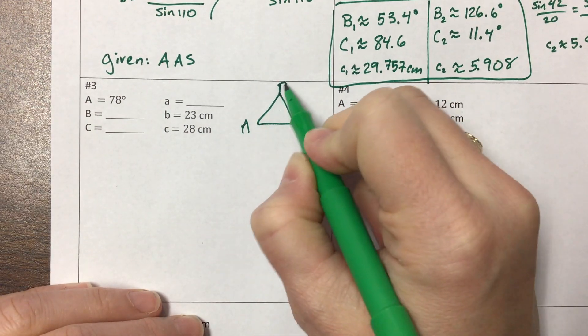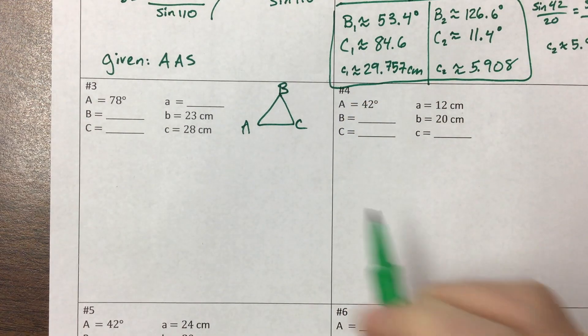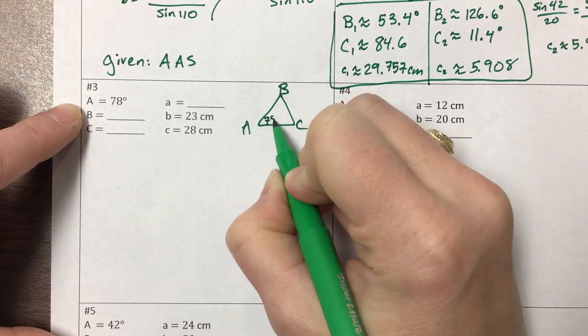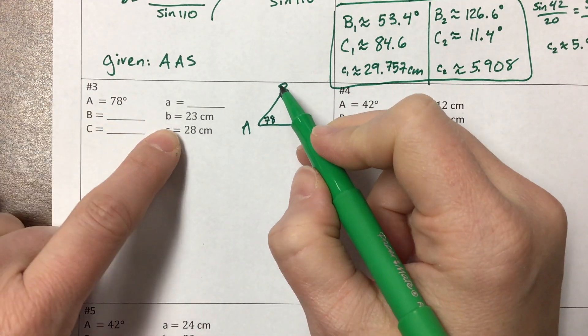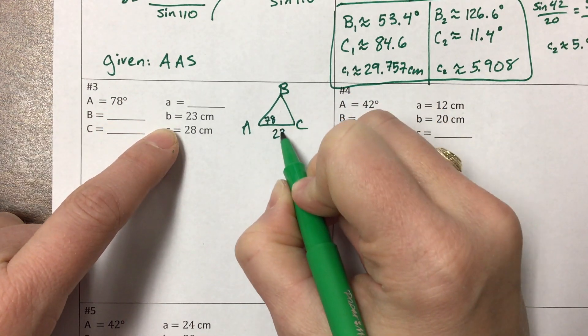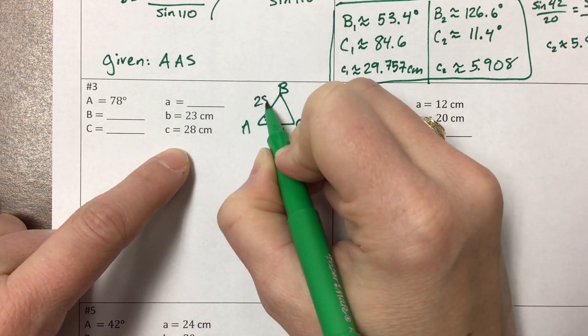So once again, I'm drawing something. I don't care if it's to scale. I just want to label things. Little b is across from angle B, that's 23. Little c is over here, 28.